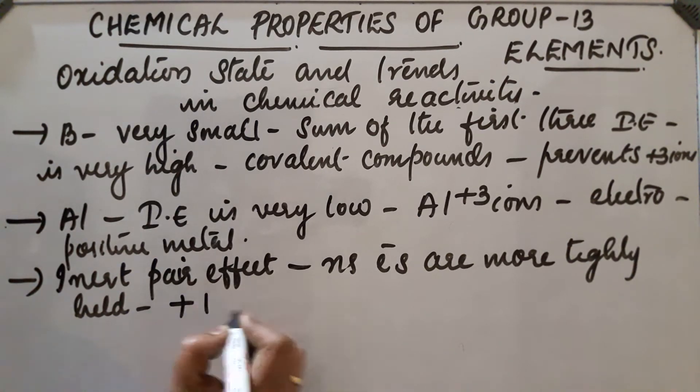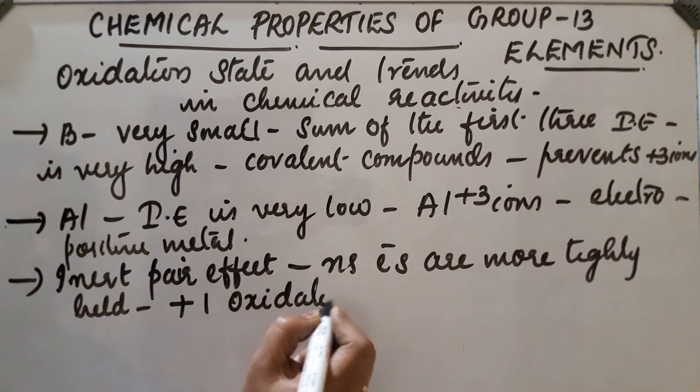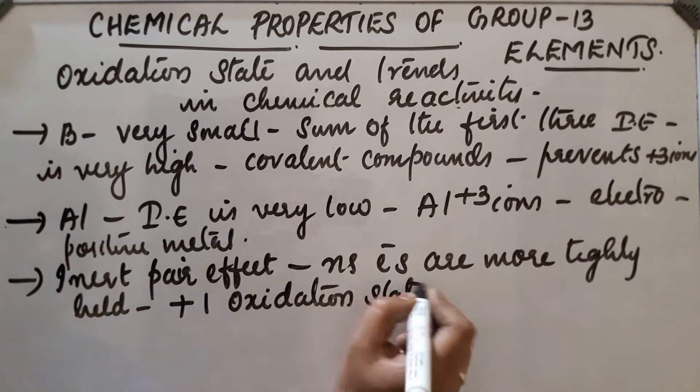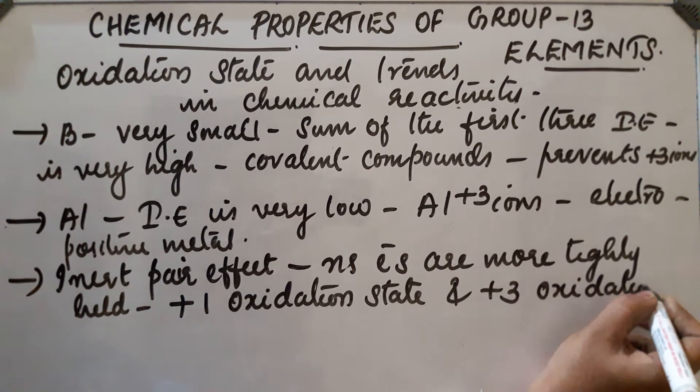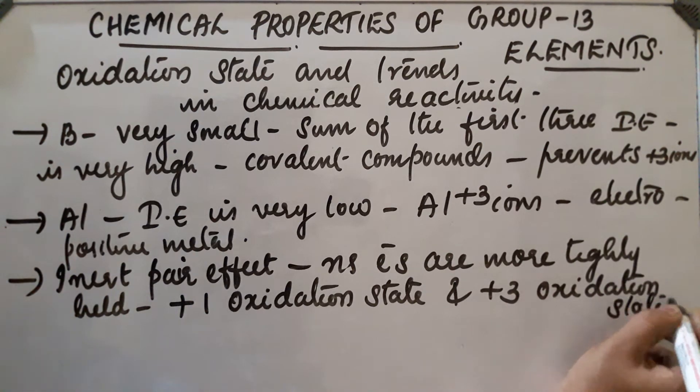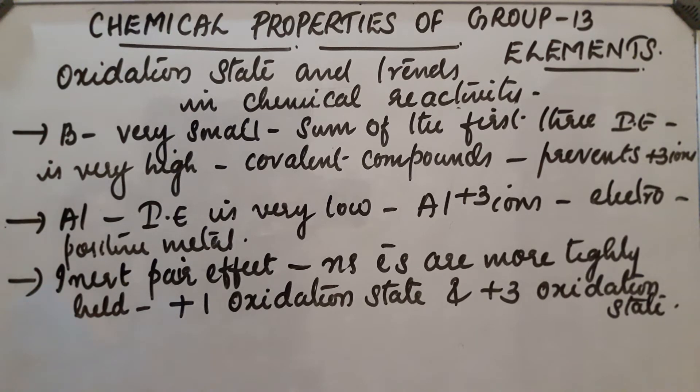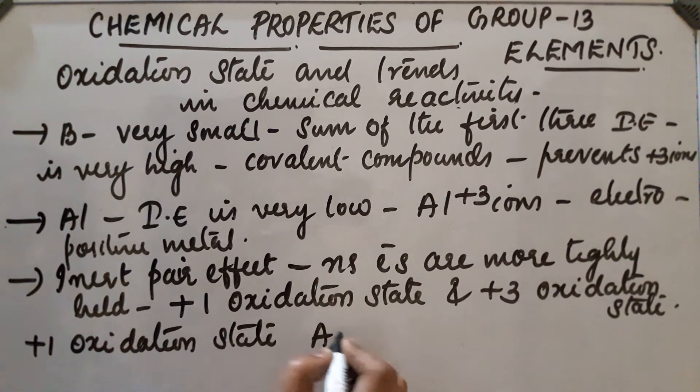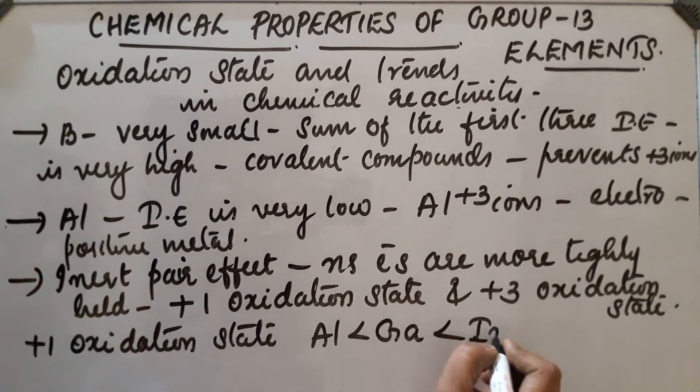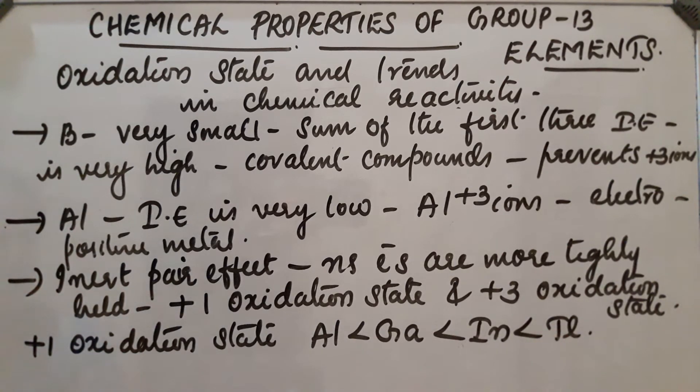As a result, it has oxidation states plus one and plus three. Plus one is more prominent for heavier elements due to inert pair effect. The order of plus one oxidation state is: aluminum less than gallium, then indium, then thallium. In the case of thallium, plus one oxidation state is more stable.